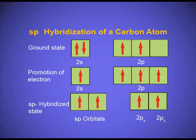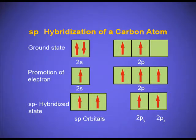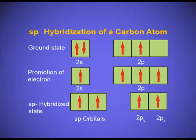In the SP hybridized state, one s and one p orbital will undergo hybridization. This is SP hybridization — it will have 50% s-character and 50% p-character. The remaining 2py and 2pz orbitals will remain unhybridized. This mixing takes place in both carbons, so each carbon will have two SP hybridized orbitals and two unhybridized 2p orbitals.